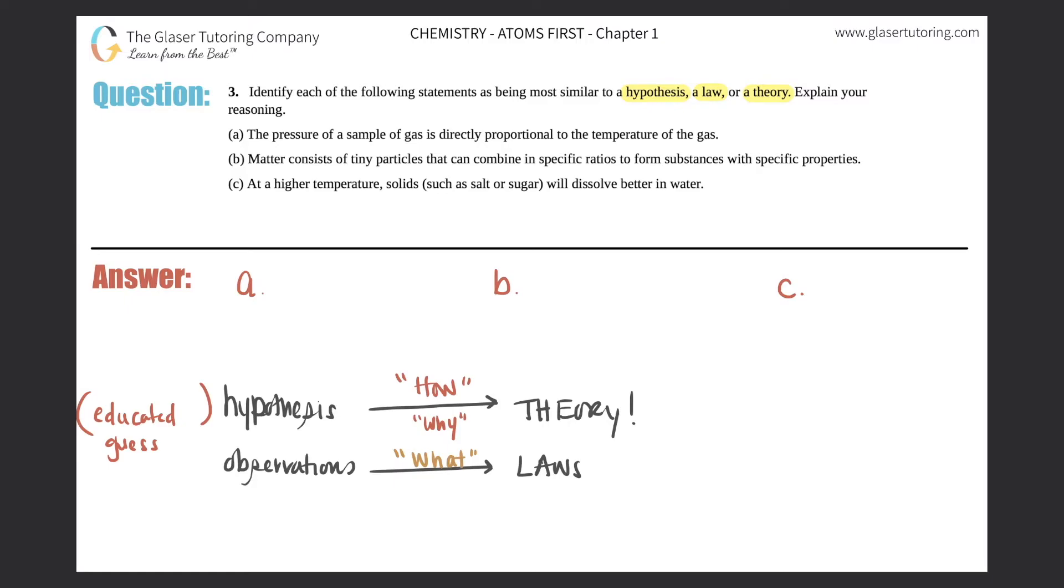So let's look at letter A: the pressure of a sample of gas is directly proportional to the temperature of the gas. Doesn't really sound like a guess, right? Seems like we're way past that, so it wouldn't be a hypothesis. Now we just got to figure out if it's a law or a theory. Is it asking what's going on, or can we say what's going on, or how or why? Let's see: the pressure of a sample of gas is directly proportional to the temperature of a gas. Well, what's directly proportional? Oh, the pressure. You see how you can answer a what question here? Doesn't answer anything about how something is happening or why something's happening. It's just telling you what's going on. So this would be a, you got it, it's a law.